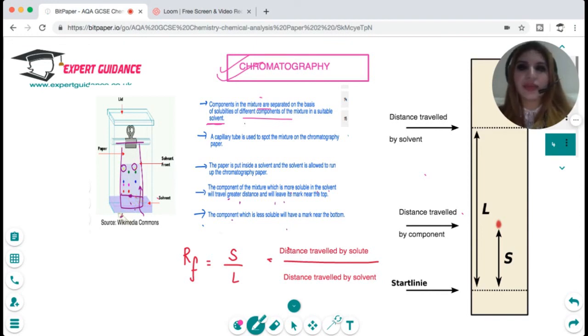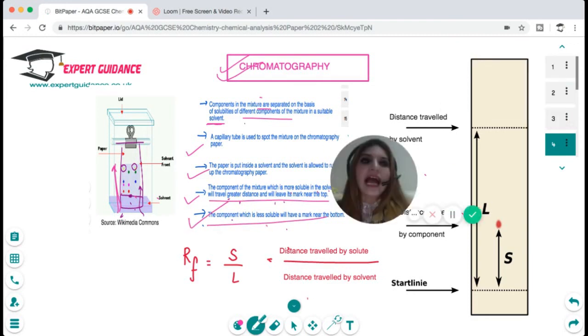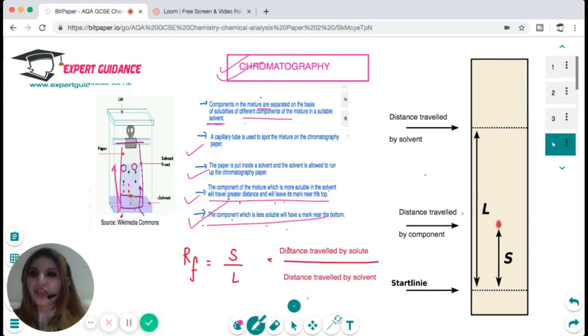You take a paper, mark a line with a pencil, and dot the substance you want to separate with a capillary tube. By capillary action the solvent travels up and as it travels up it dissolves the components of a mixture and separates it on the basis of its solubility. The component which is more soluble in the solvent will travel greater distance and will leave its mark near the top. The component which is less soluble will leave a mark near the bottom.